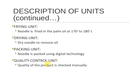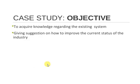In the frying unit, the noodle is fried in palm oil at 170 to 180 degrees Celsius. In the drying unit, oil is removed from the noodle. In the packing unit, the noodle is packed using digital technology. In the quality control unit, the quality of the product is checked manually.